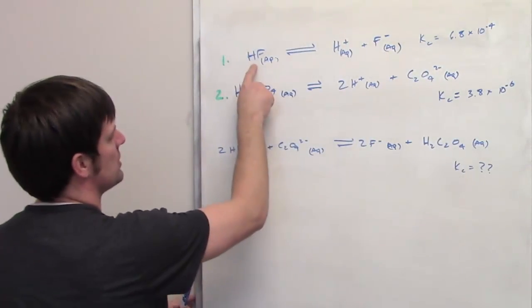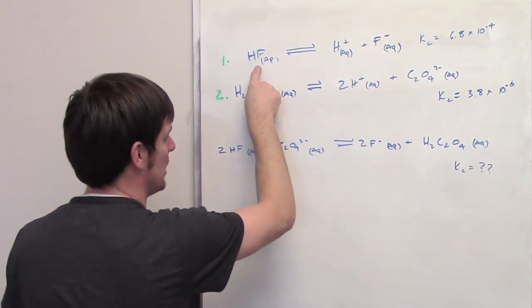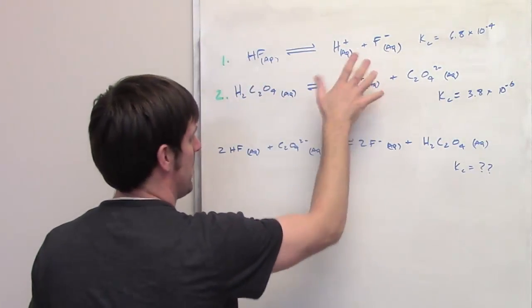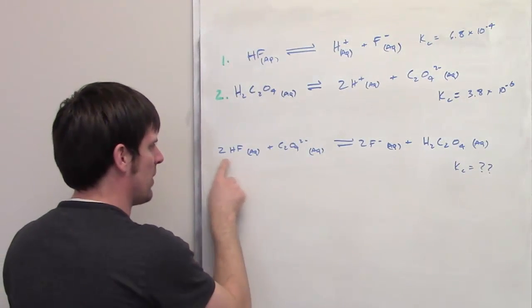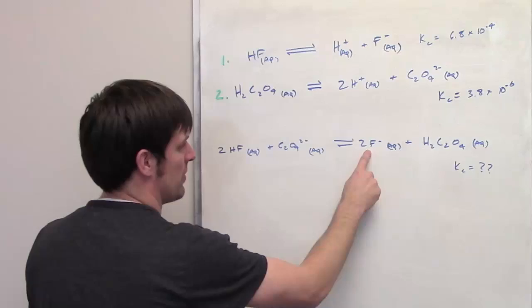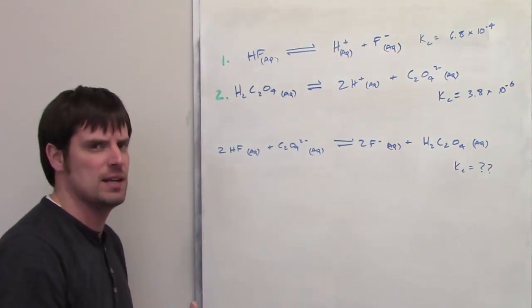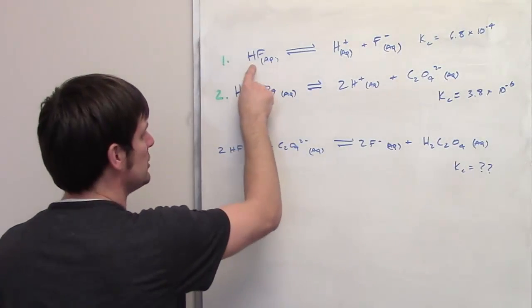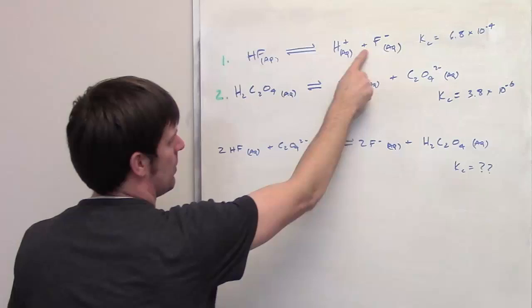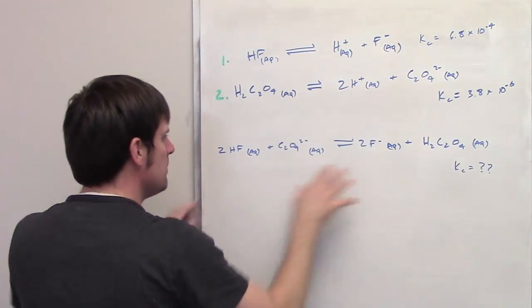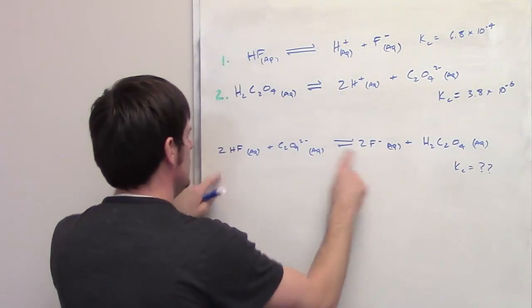First of all you'll notice that this top equation or reaction has HF on the left, H plus and F minus on the right. Does our final reaction have some of that? Well it's got HF here on the left and it's got F minus on the right. It doesn't have H plus on the right but it's got F minus, so it has some elements of that. One thing you'll notice is that the HF and the F minus only have 1 as their coefficient in front of them up here, but down here the overall target equation we're trying to get to, they have a 2. So what can I do?